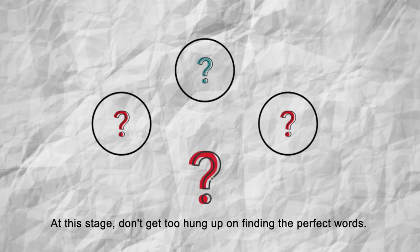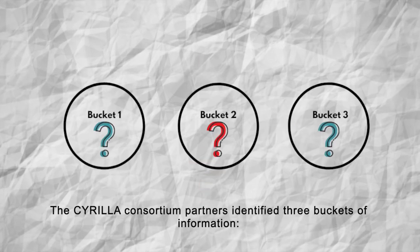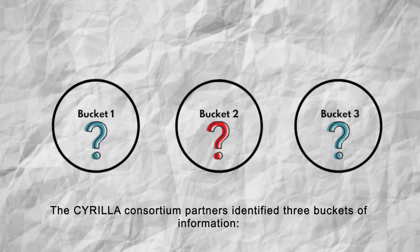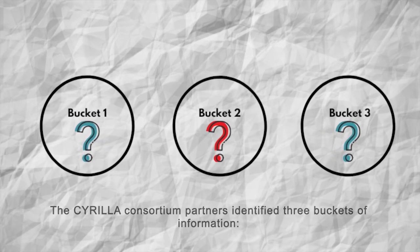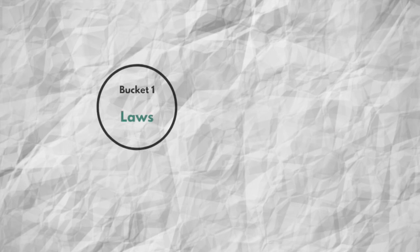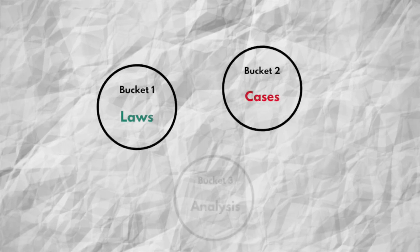The Cirilla Consortium partners identified three buckets of information. Bucket one: Laws. Bucket two: Cases. Bucket three: Analysis.